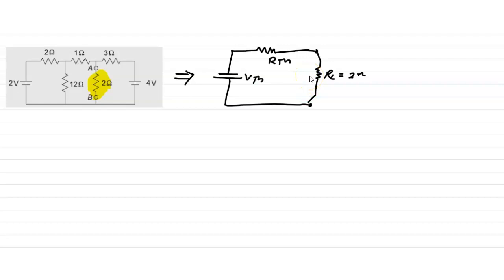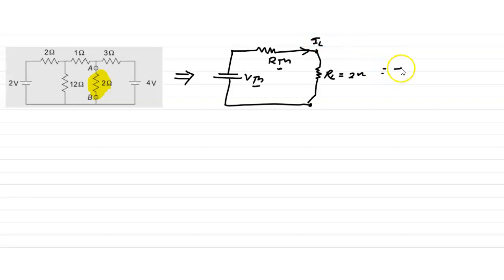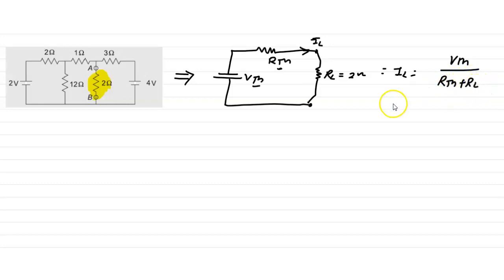So we have to first find out Vth, then find out Rth, then apply the simple KVL principle to find out the current IL. IL is given by IL equals Vth upon Rth plus RL.